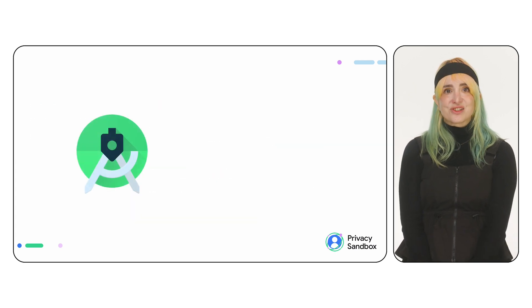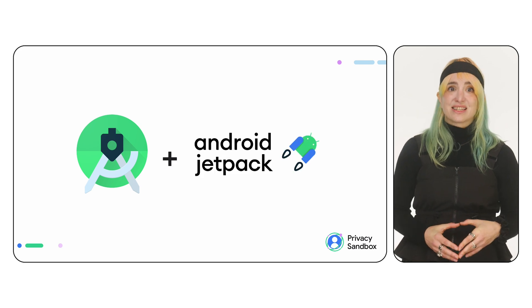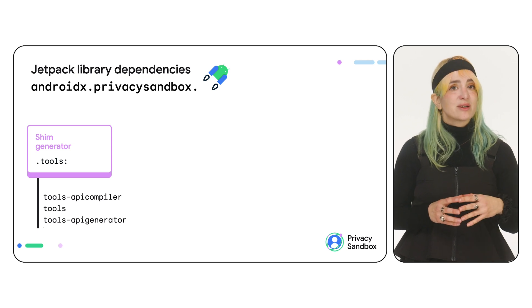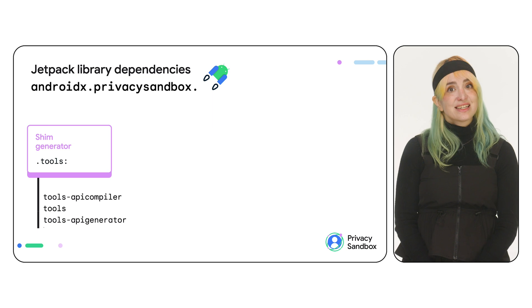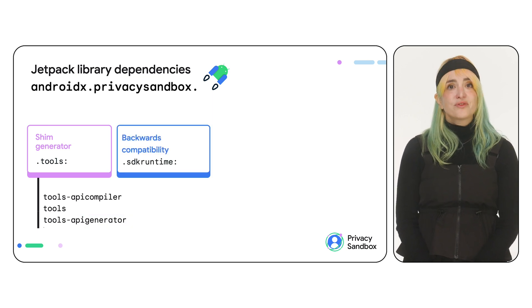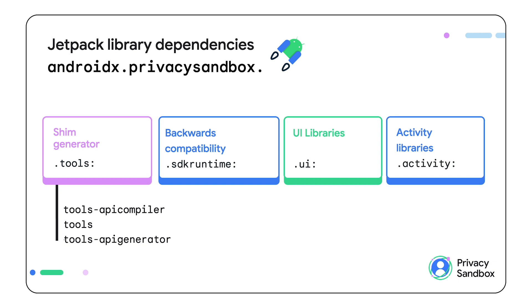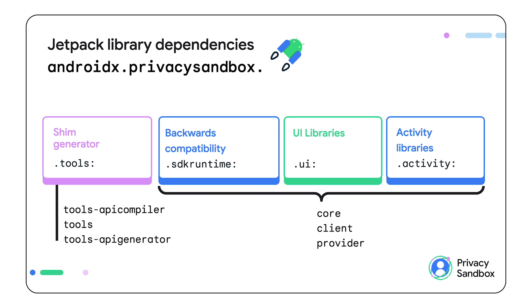This is thanks to AGP integration with the Gradle Privacy Sandbox plugin and the Jetpack libraries that you are now ready to hear about. These Jetpack libraries are all part of the privacy sandbox space in Jetpack. Tools offers access to the shim. The RE-SDK should depend on tools and API compiler; the RE-SDK or app on API generation. All of the compat versions of the SDK runtime entities that make backward compatibility work will be in SDK runtime. Then, depending on whether you're using remote UI, activities, or both, you will depend on the UI and activity libraries. SDK runtime, UI, and activity all have a core component shared across the board, a client component required in the app or RE-SDK, and a provider component for the RE-SDK.